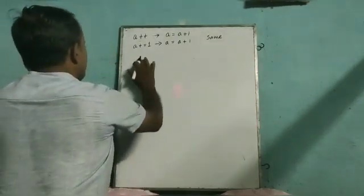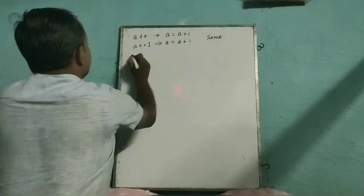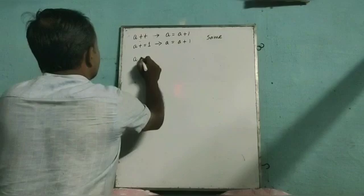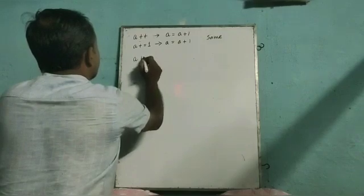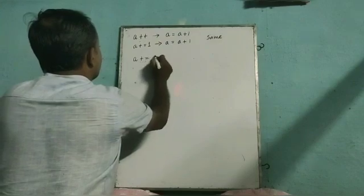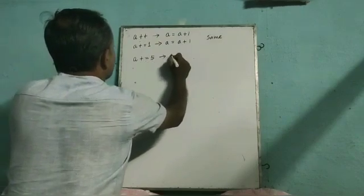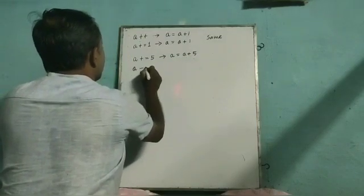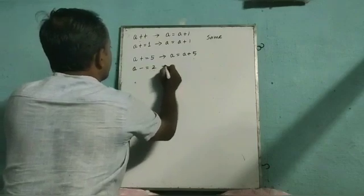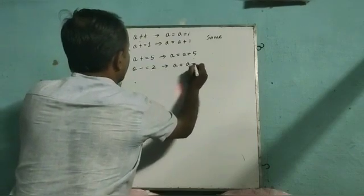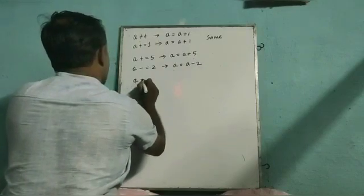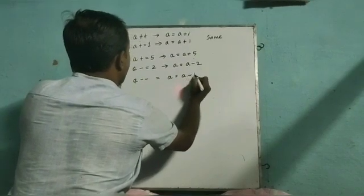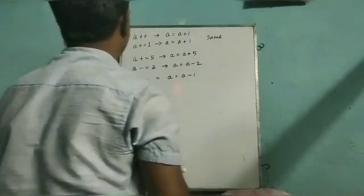In the same way, if we want to increment the variable with a different number, like a plus equal to 5, this means a equal to a plus 5. Again, a minus equal to 2 means a equal to a minus 2. And if I want to decrease by 1, I will write a minus minus.